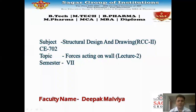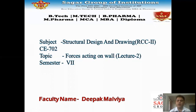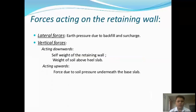Hello everyone, this is Deepak Malabeya and today we are going to discuss about the retaining wall, types of forces acting on the retaining wall, types of failure due to the retaining material, and the IS code criteria 456-2000. The first force acting on the retaining wall is lateral forces and the second is vertical forces.